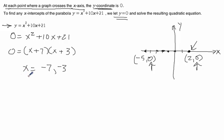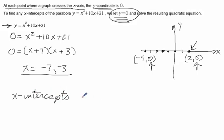So, those are the x-coordinates, and we know that the y-coordinate is zero, so therefore, our x-intercepts are (-7, 0) and (-3, 0).